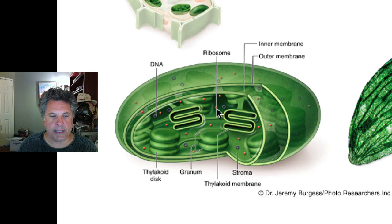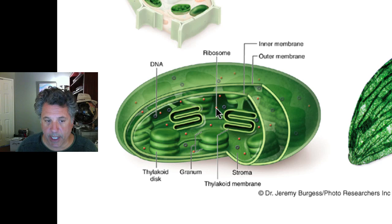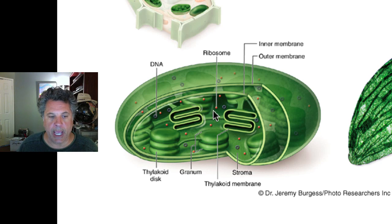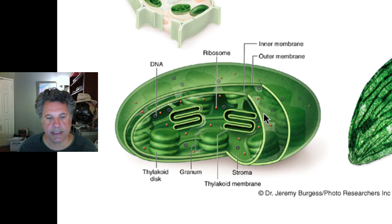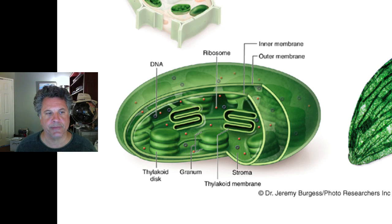Also within chloroplasts there are ribosomes. Like mitochondria, they have their own ribosomes and their own circular DNA molecules — multiple DNA molecules in each chloroplast. There can be hundreds of chloroplasts in a single cell.